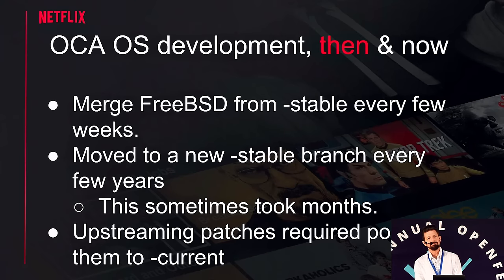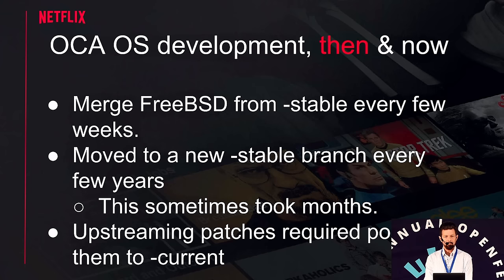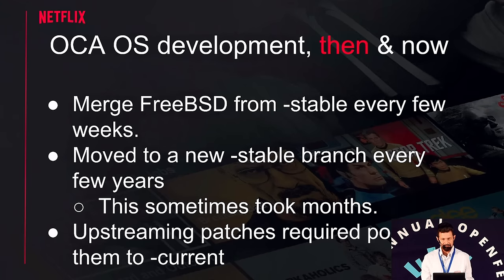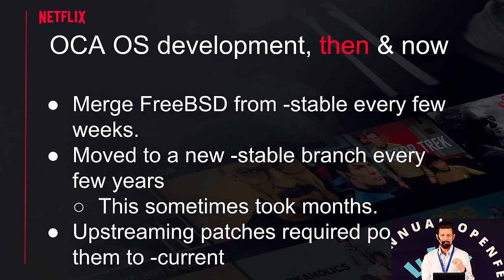I want to talk about how we do FreeBSD development at Netflix. When we first started off, we made the choice everyone makes: to track a stable branch. The way FreeBSD works is there's FreeBSD Current — similar to the Linus tree, where everything goes in first — and then there are stable branches, which are like Linux long-term support or LTS branches. There's supposedly a new release every two years, but in practice it works out to every three or four. What we used to do was track the latest stable branch, merge all the security and bug fixes every few weeks, and make an internal release that went out to our OCAs. That worked really well during that period.